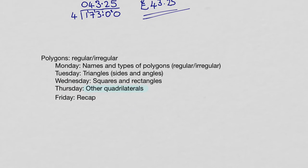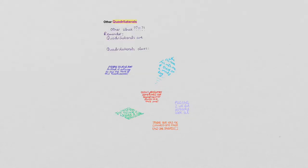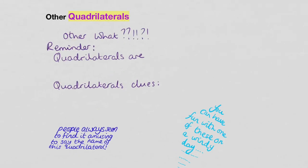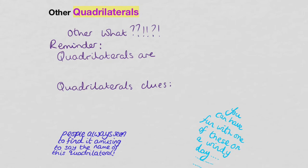So where we're up to with our week's work is that we've looked at names and types of polygons and regular and irregular ones. We've looked at triangles and we've looked at squares and rectangles. So today, we're looking at other kinds of quadrilaterals.